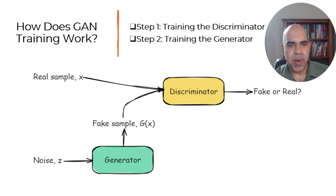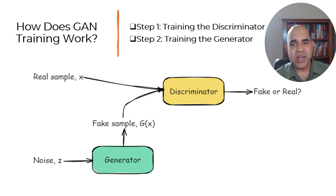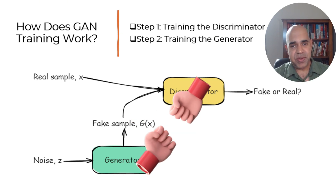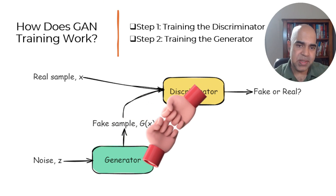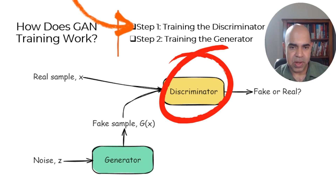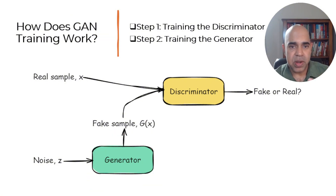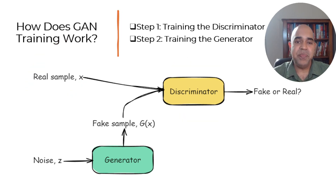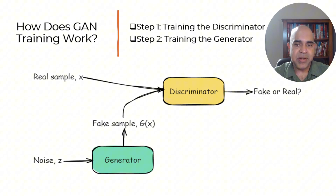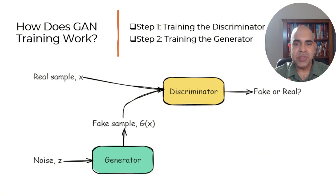So how does GAN training work? The training of a GAN can be thought of as a zero-sum game where the Generator and the Discriminator are playing against each other. In step one, we train the Discriminator neural network. The Discriminator is presented with real data from the dataset and fake data generated by the Generator. The Discriminator learns to classify real data as real and generated data as fake, and its loss is minimized when it correctly distinguishes between the two.